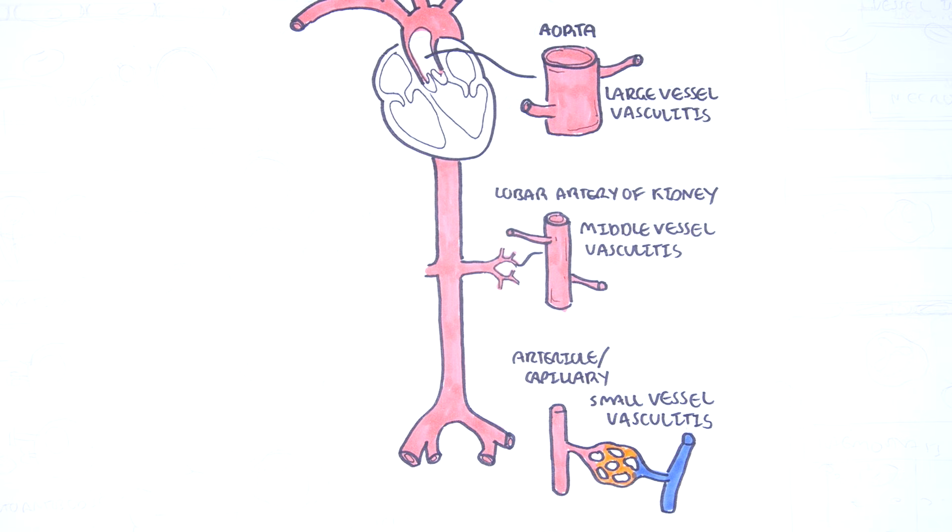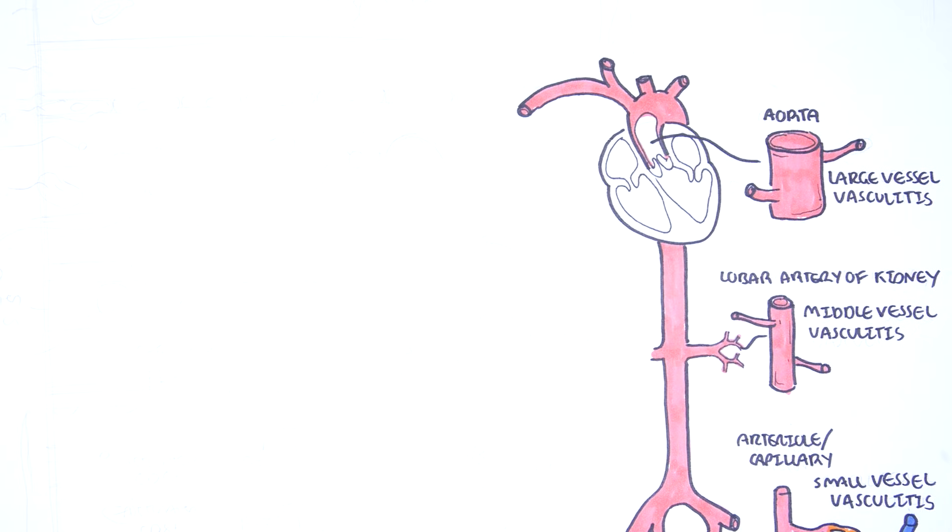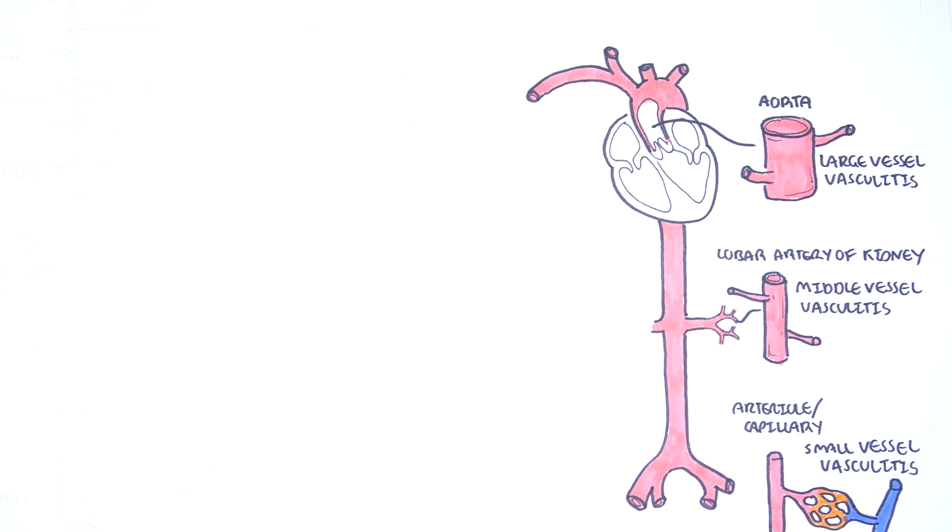The medium and particularly the small vessel vasculitis are the types which present with cutaneous skin findings such as purpura and petechiae because the smaller blood vessels are more superficial to the skin.